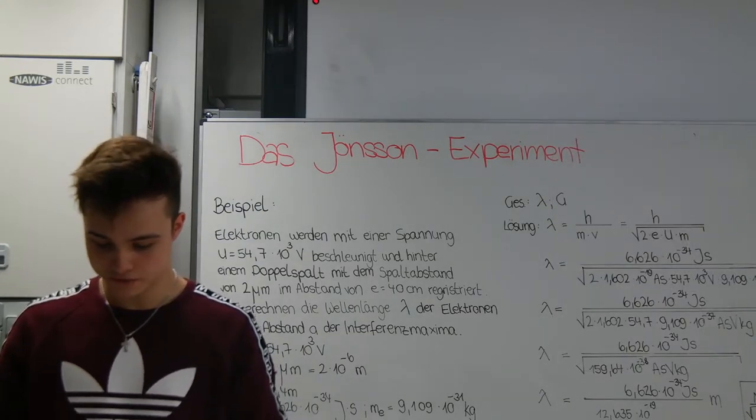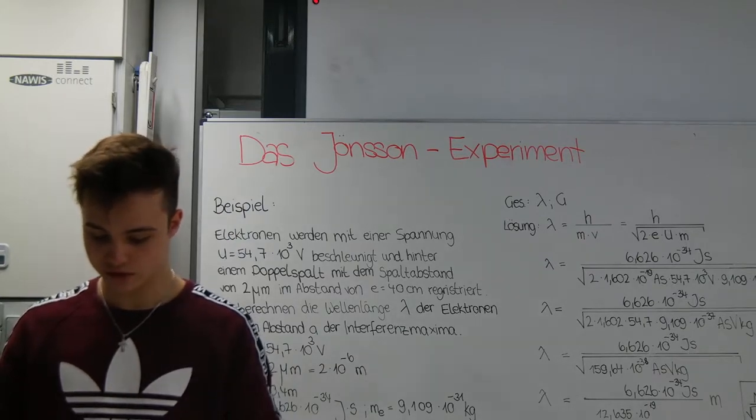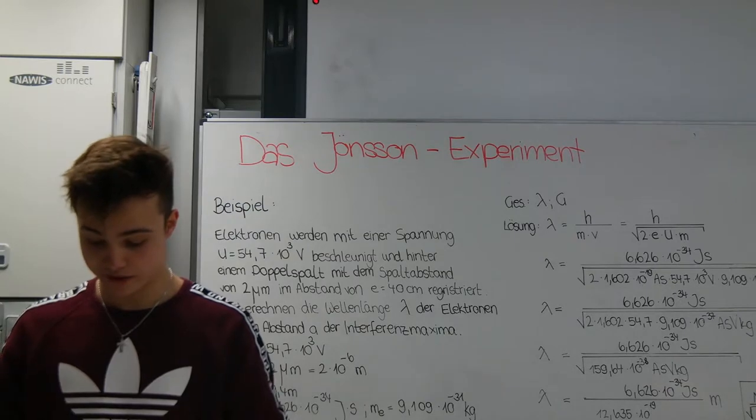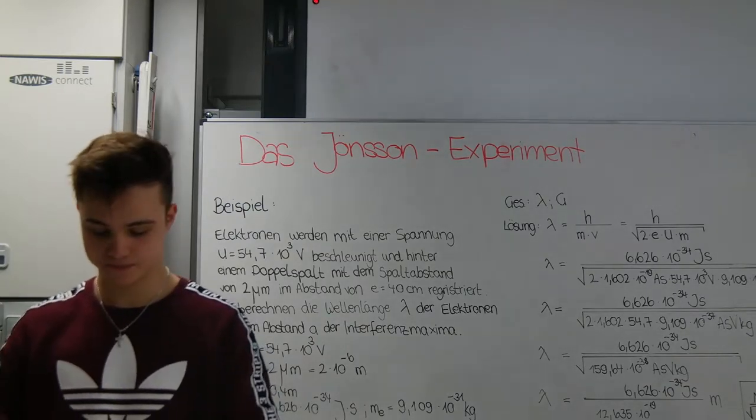In 1959 in his dissertation at the University of Tübingen, he demonstrated the interference of electrons in the double-slit experiment. Very nice.